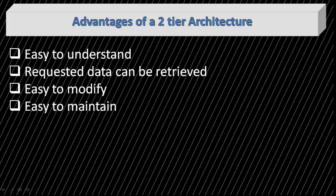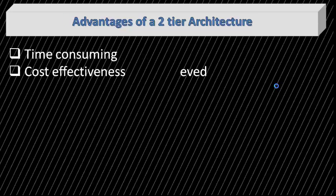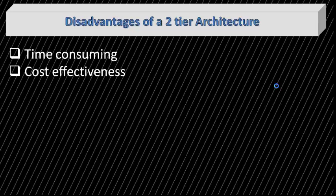The disadvantages of two-tier architecture are: it is time-consuming when there is a large number of users, as all requests are queued and handled one after another, meaning it will not respond to multiple users at the same time. The architecture would also be a little cost-effective to implement.